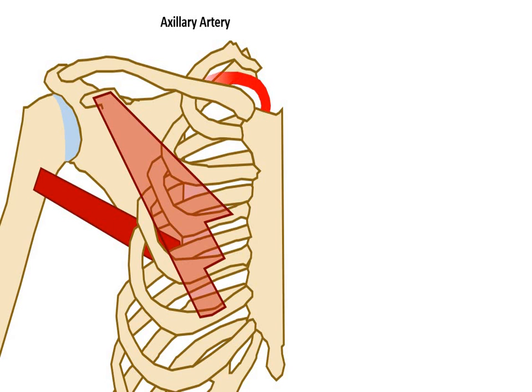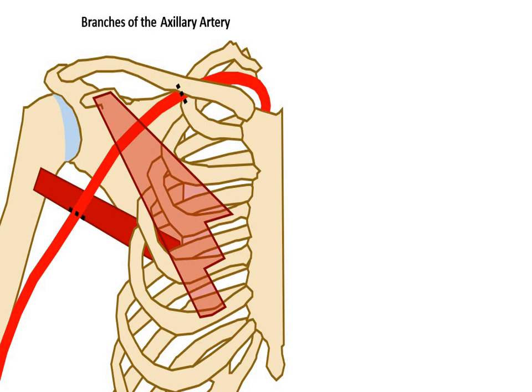Here is the axillary artery. Let's examine its branches. Here we have the superior thoracic artery. It runs along the superior border of pectoralis minor and helps to supply the first two intercostal spaces.